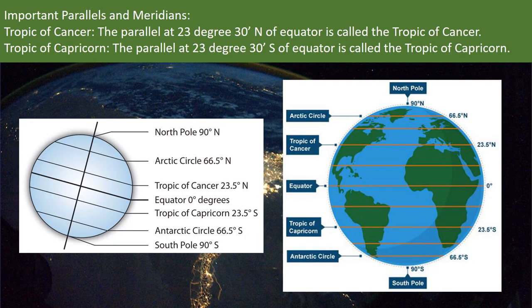Let us see some important parallels and meridians. The parallel at 23 degree 30 minutes north of equator is called the Tropic of Cancer. All places between 23 degree 30 minutes north and south of equator receive perpendicular rays on two days in a year, i.e. on September 22nd and March 21st, as the sun appears directly overhead at noon at these places.